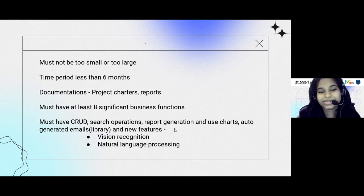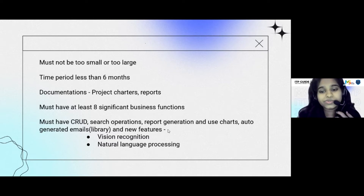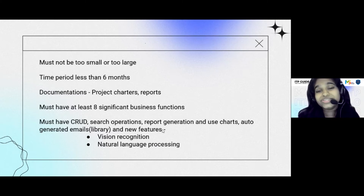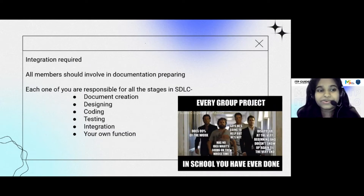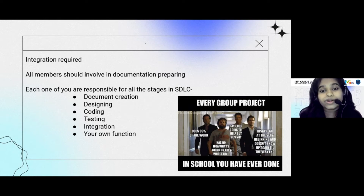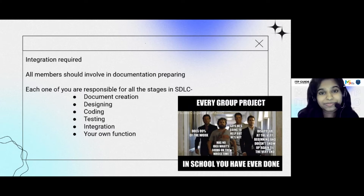Use new features in your project — for example, vision recognition and natural language processing. Those are new features you can add; they are not too hard to learn. Start learning from now so you can stand out your project from others. Also, all members should be involved in documentation preparation. Each member has to work on all the stages in the software development lifecycle, do documentation creation, and be responsible for your own function.